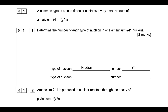Next we need to work out the number of neutrons, so we're going to do the nucleon number minus the number of protons - that should give us the number of neutrons. We've calculated the number of neutrons by doing the difference between nucleon number and proton number: 146. So that's our second type of nucleon involved.